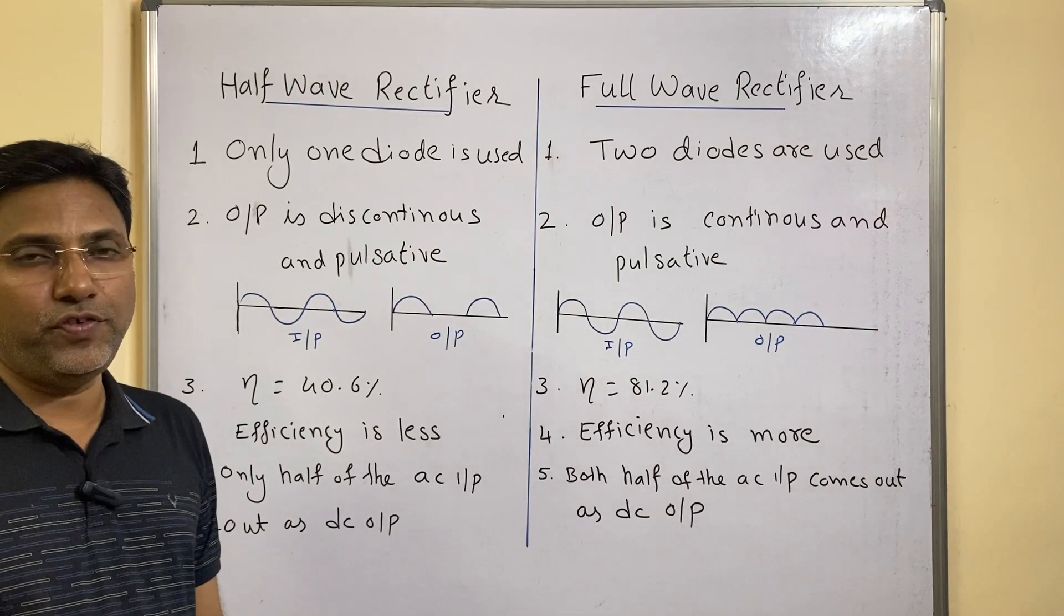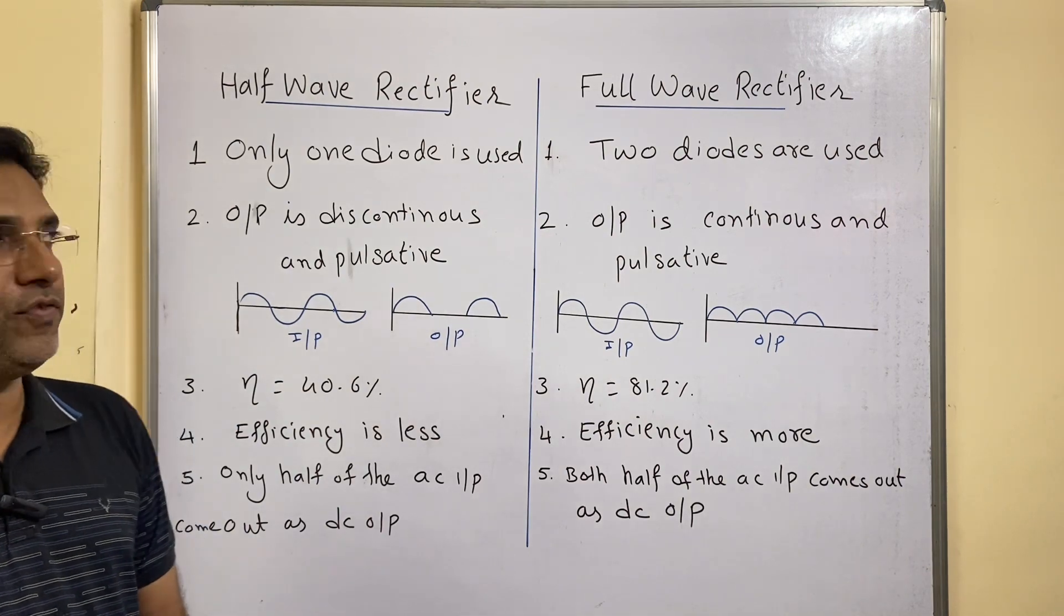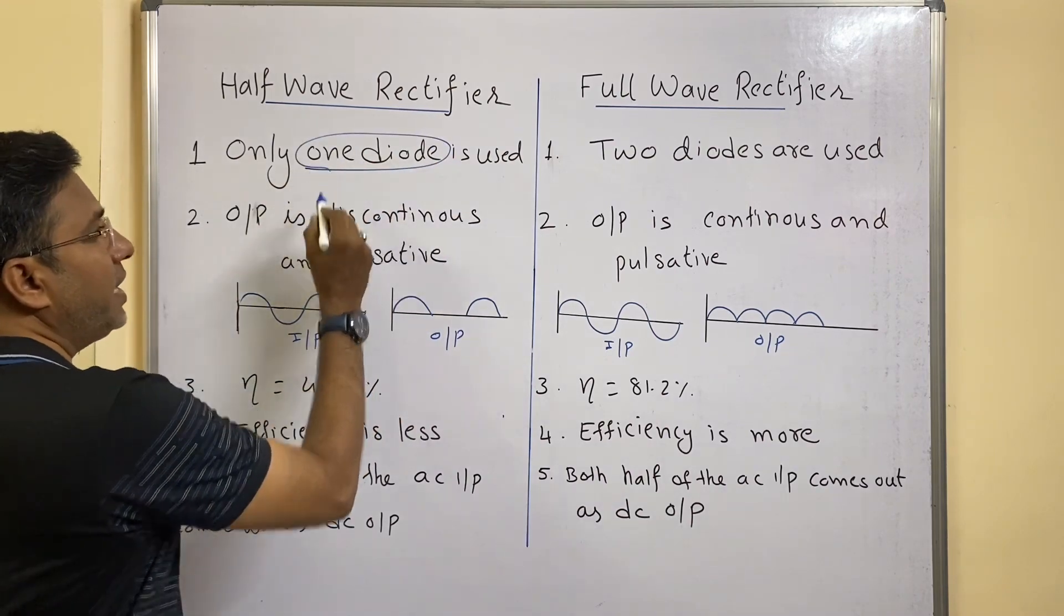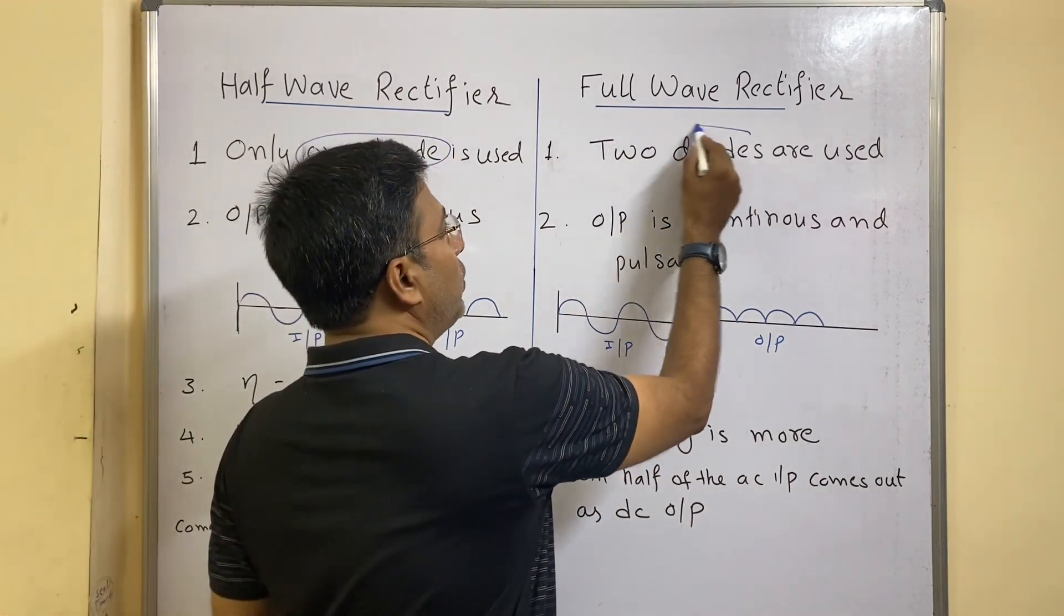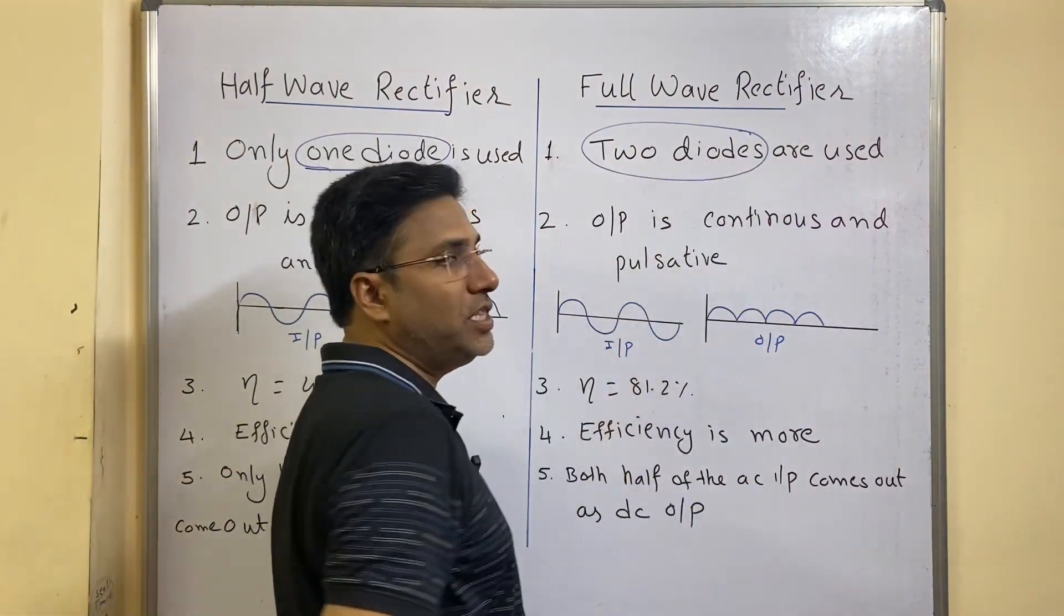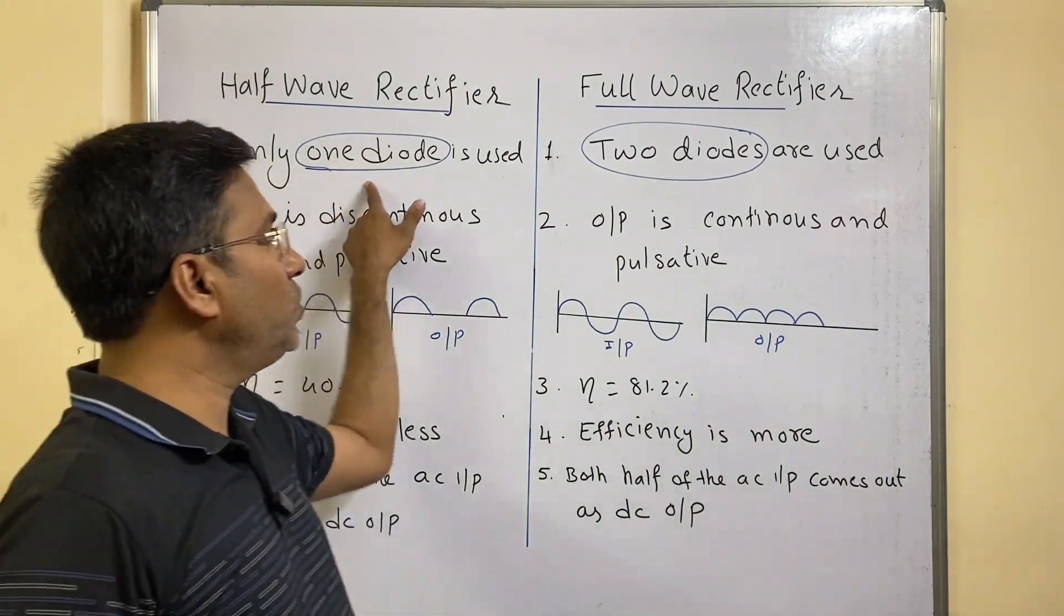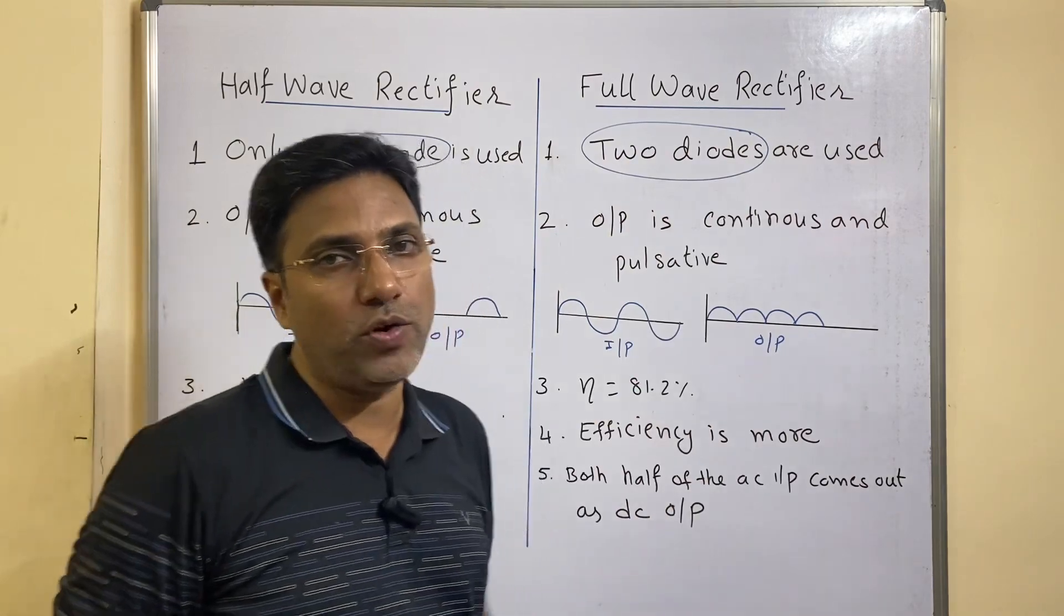Let us see the difference between half wave and full wave rectifier. In case of half wave rectifier, we use only one diode. In case of full wave rectifier, two diodes are used. The first point is very simple: in case of half wave rectifier, only one diode is used; in case of full wave rectifier, two diodes are used.